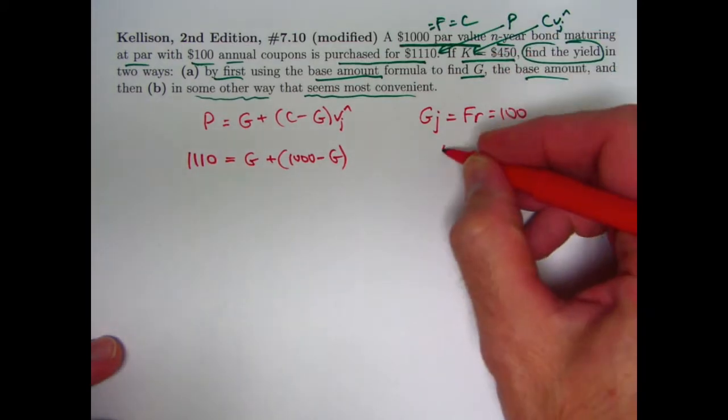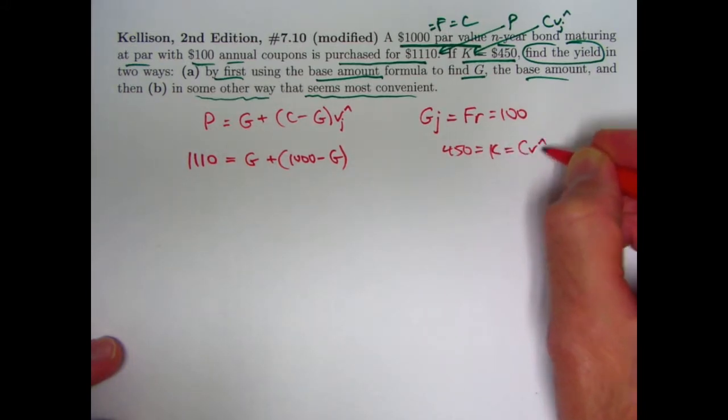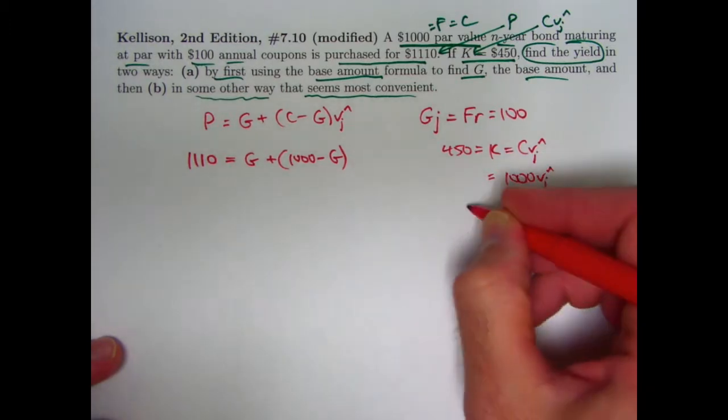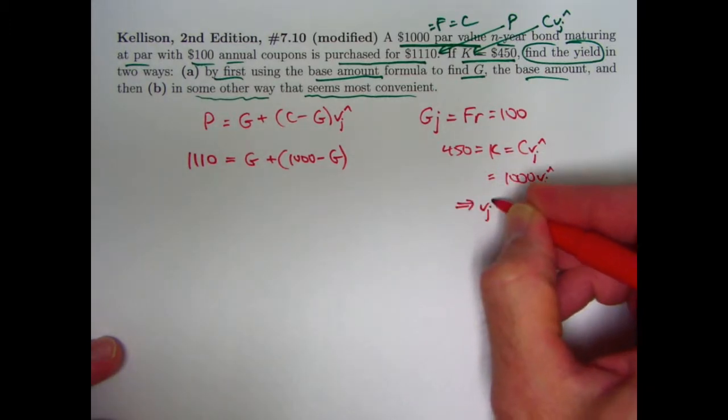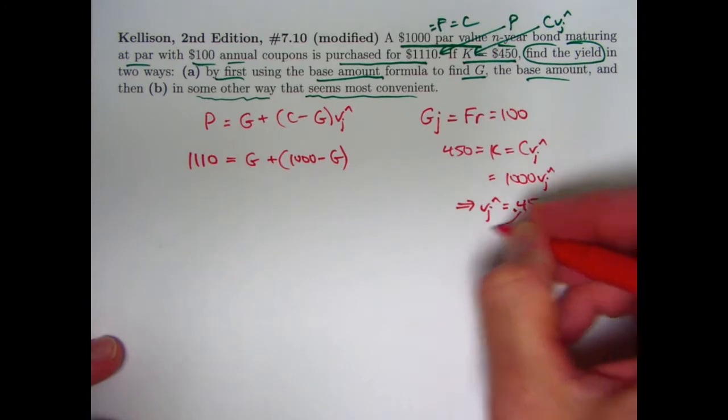K, which is 450, equals C times V to the N, which is, since C is a thousand, one thousand times V sub j to the N. So V sub j to the N is 450 divided by a thousand, which would be 0.45. So we can plug that in here.